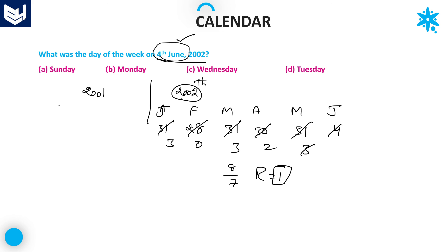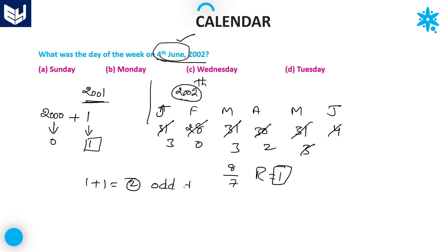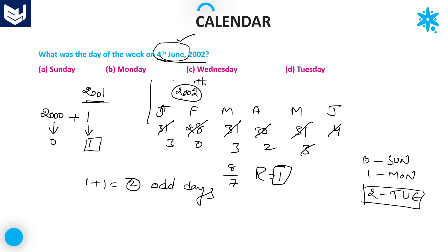Now calculate the left-hand side — these are 2001 completed years. The maximum 400 multiple in 2001 is 2000, plus 1 remaining year. For 2000 years, number of odd days is 0. That 1 remaining year is a normal year, so it has 1 odd day. Left-hand side total: 0 + 1 = 1. Adding right-hand side: 1 + 1 = 2 total odd days. If odd days are 2, that day is Tuesday. Option D is the right answer.